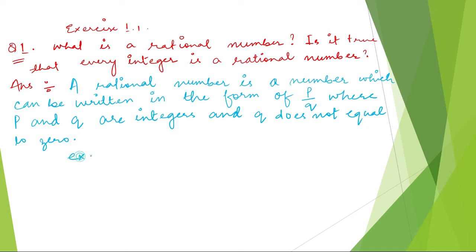Let me give an example of a rational number. Any number that can be written in the form of P by Q. So, 2 by 3 is a rational number because both 2 and 3 are integers and 3 does not equal to 0. Or we can say minus 3 by 5 — minus 3 is also an integer, so this is also a rational number. Anything written as a fraction where both numerator and denominator are integers is called a rational number.